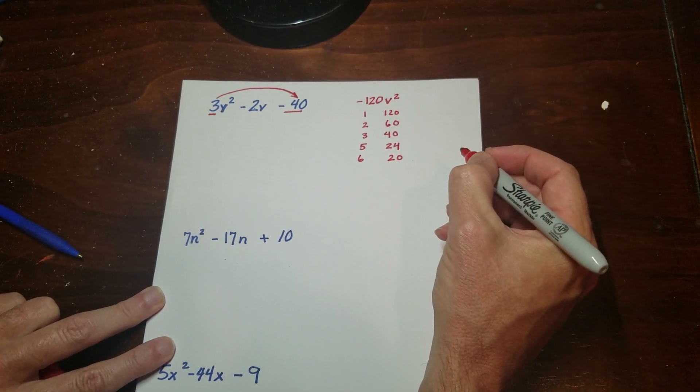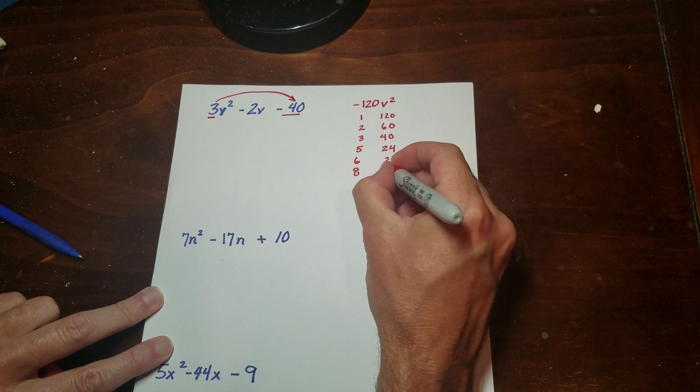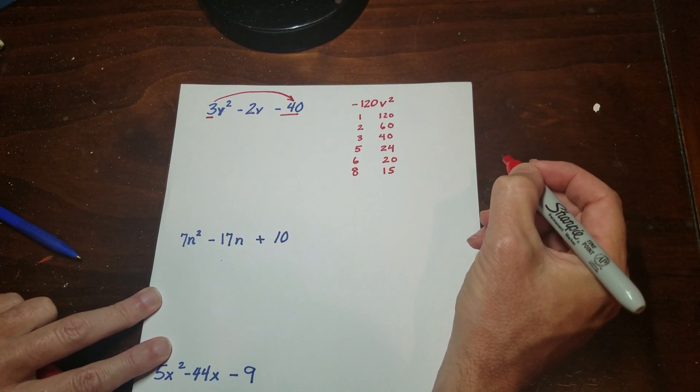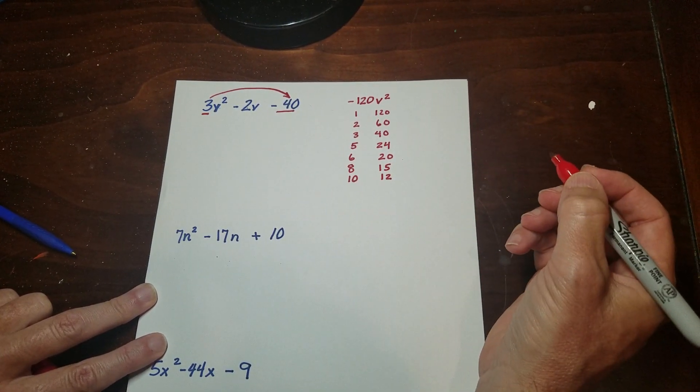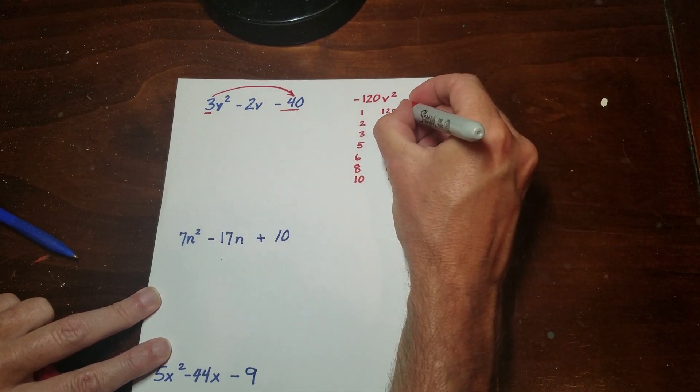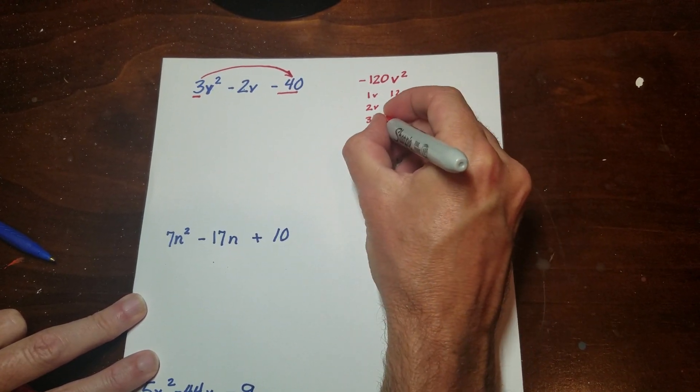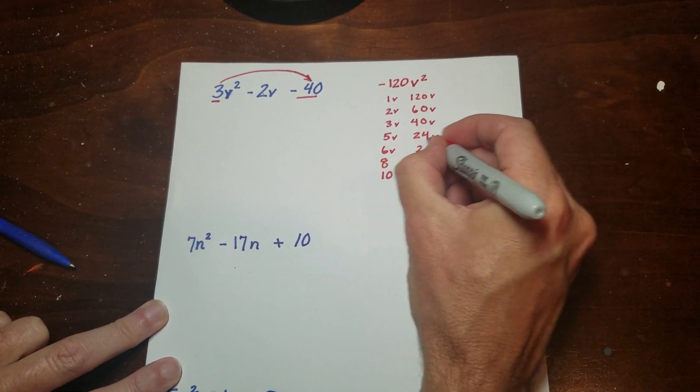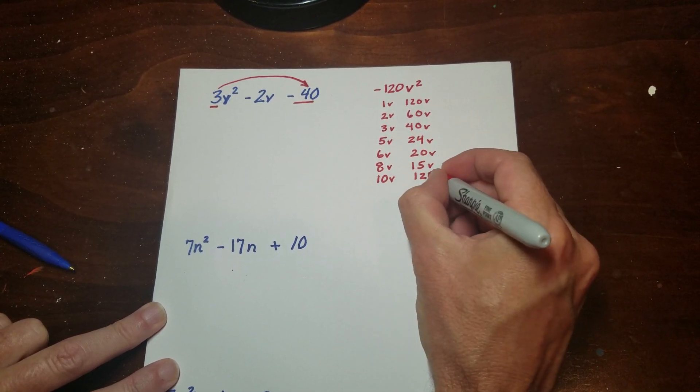6 will go 20. 7, no. 8 will go in 15. 9 doesn't work, 10 will work with 12. So as I pointed out, I don't want to forget that these all have a v on them. Like this. So before it was just the numbers, but now I have to remember these are actually variable terms. And that's going to become important for what we're going to do in a second.